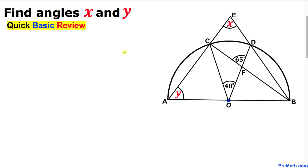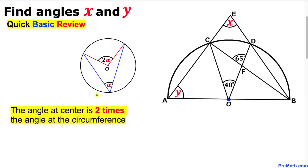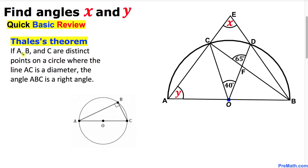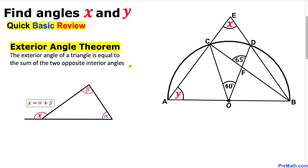Before we proceed, let me go over a quick basic review. Our first crucial property: the angle at the center is twice the angle at the circumference. Now let's recall Thales' theorem: if A, B, and C are distinct points on a circle where line AC is a diameter, then angle ABC is a right angle.